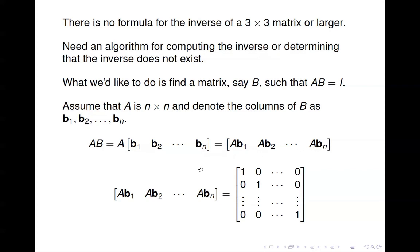We want A times B to equal the identity matrix, so we want A times B1 to be the first column of the identity matrix, A times B2 to be the second column, and so forth. In order to determine the matrix B, we need to solve n systems of equations, and if we solve those n systems, we'll have an inverse, if it exists.